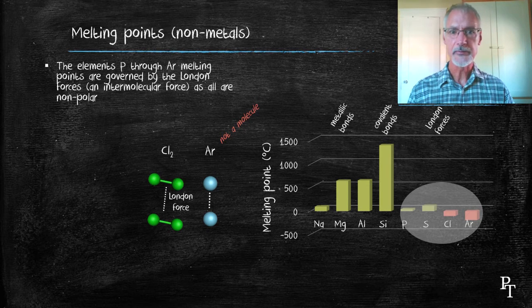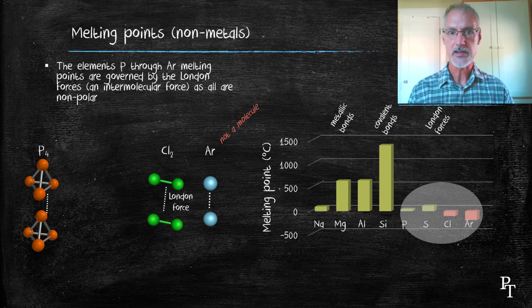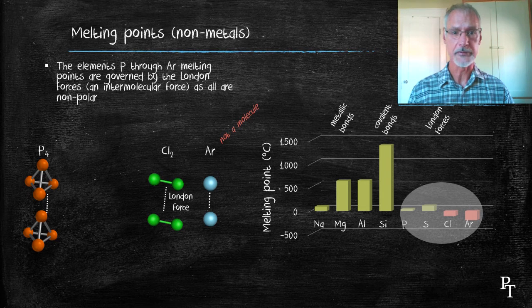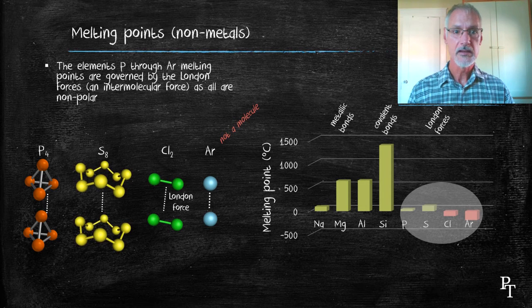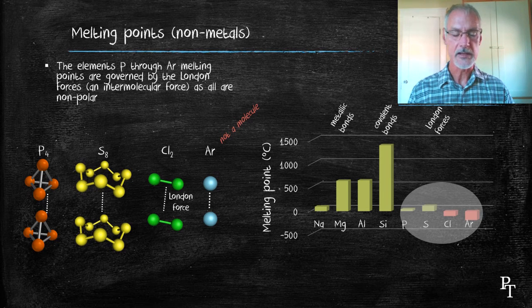Now as we take a look at phosphorus and sulfur, these two bond in odd arrangements. Now we haven't seen these before, but phosphorus tends to make a tetrahedral arrangement with three other phosphorus atoms. And sulfur, on the other hand, makes a ring of eight sulfur atoms.